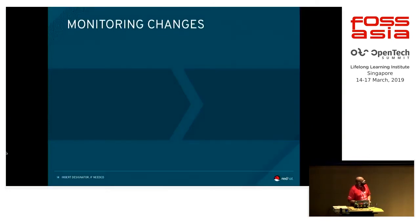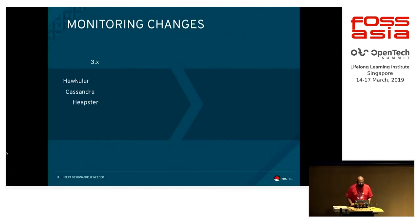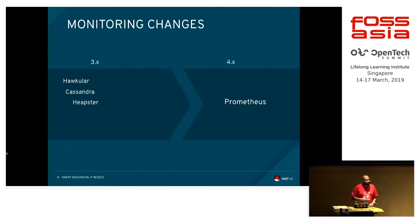Monitoring changes. Earlier in the 3.x versions we had Hawkular, Cassandra, and Heapster as our monitoring tools. In 4.x everything is completely replaced by Prometheus. We have decommissioned those three tools, and Prometheus will be completely supported from 4.x.